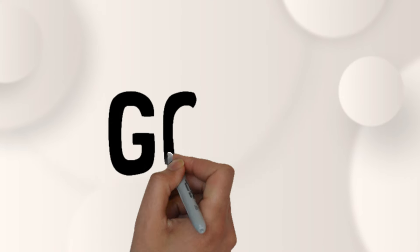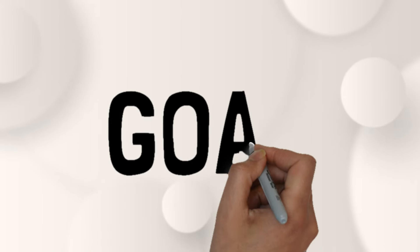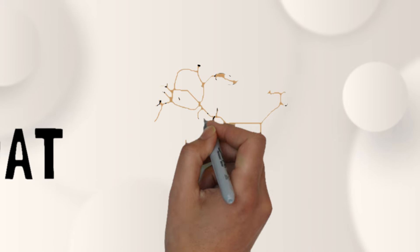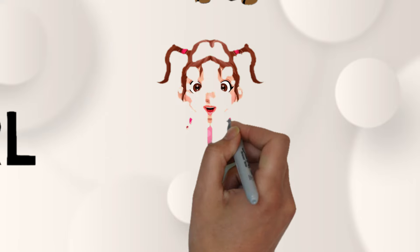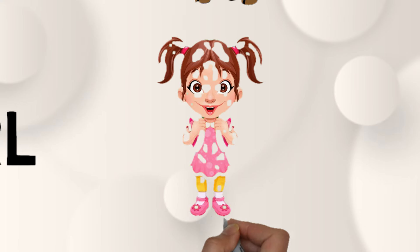G for G, O, A, T. Goat. G for G, I, R, L. Girl.